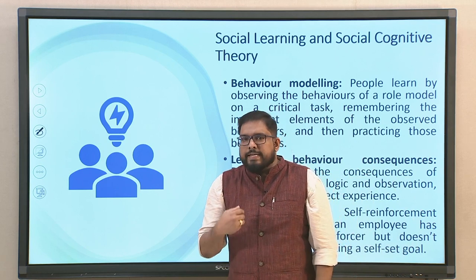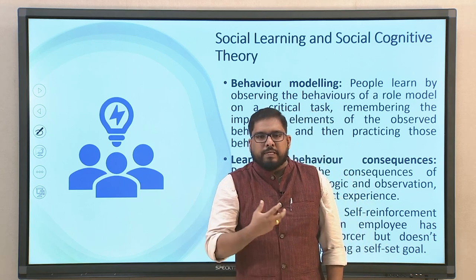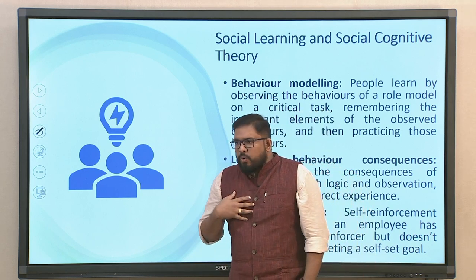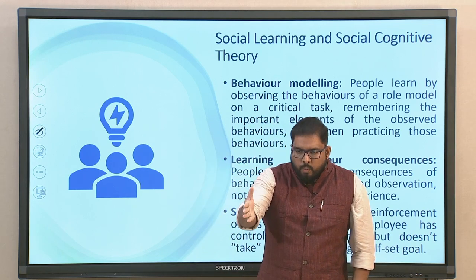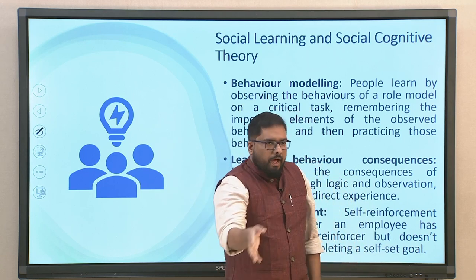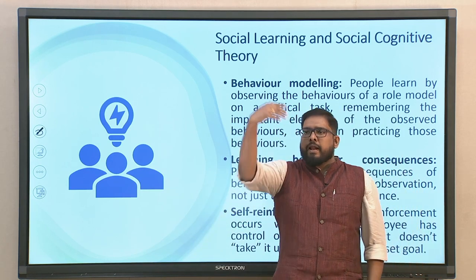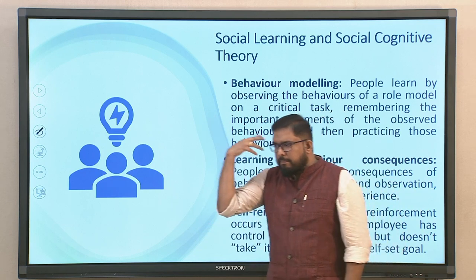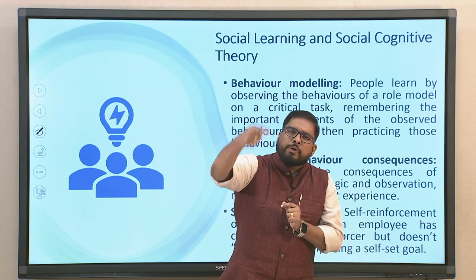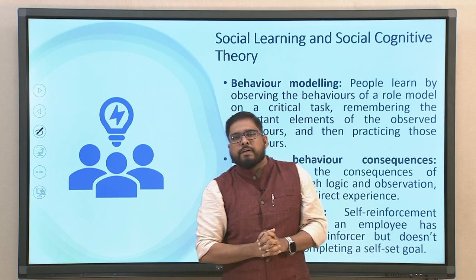Another important aspect of social learning is self-reinforcement. Self-reinforcement occurs whenever an employee has control over a particular reinforcer but does not take it without completing set goals. For example, you set a goal that you will not get up from your study table until you complete your assignment, and once done, you can have a cookie or piece of cake. You have identified a reinforcer but will only take it upon task accomplishment. This is self-reinforcement.